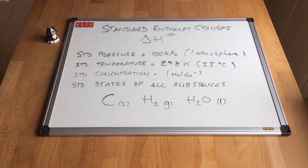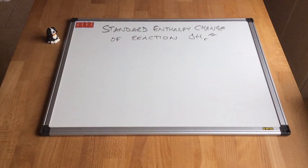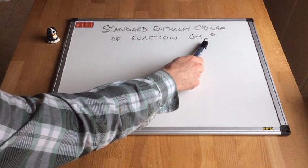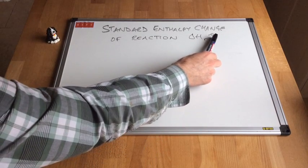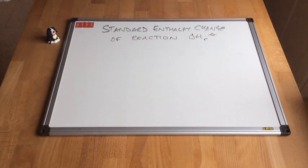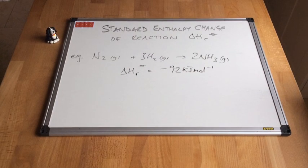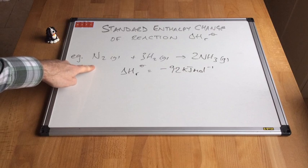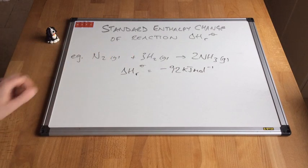We're going to look at three enthalpy changes used at AS. The first is called the standard enthalpy change of reaction, with the symbol delta H R standard. The example I'm going to use is the equation for the Haber process: the reaction between one mole of N₂ gas and three moles of H₂ gas, making two moles of NH₃ gas.